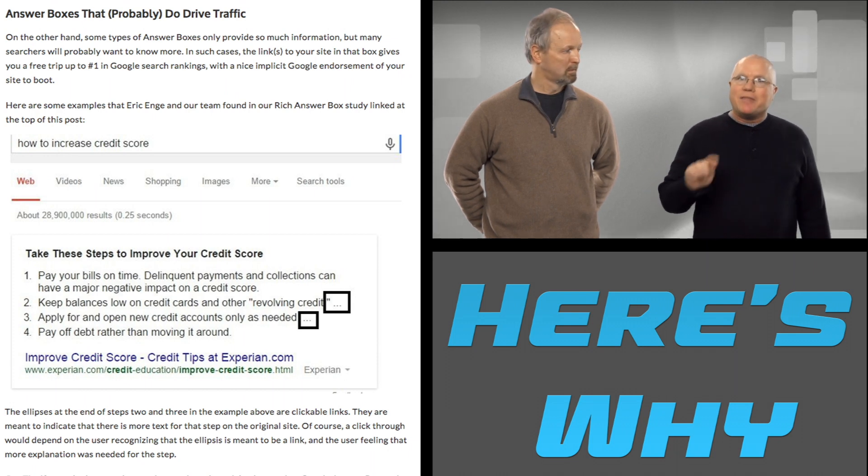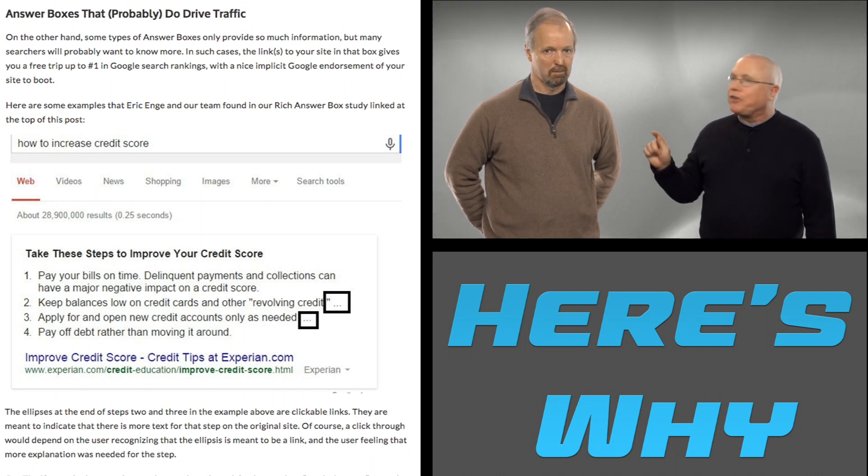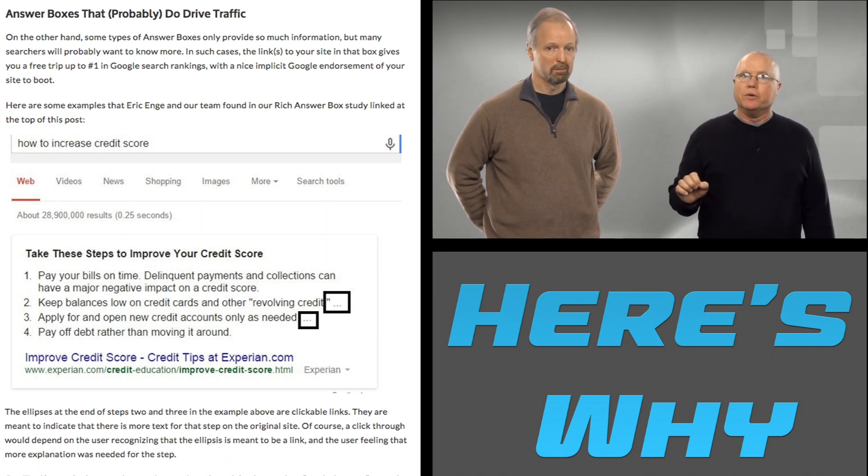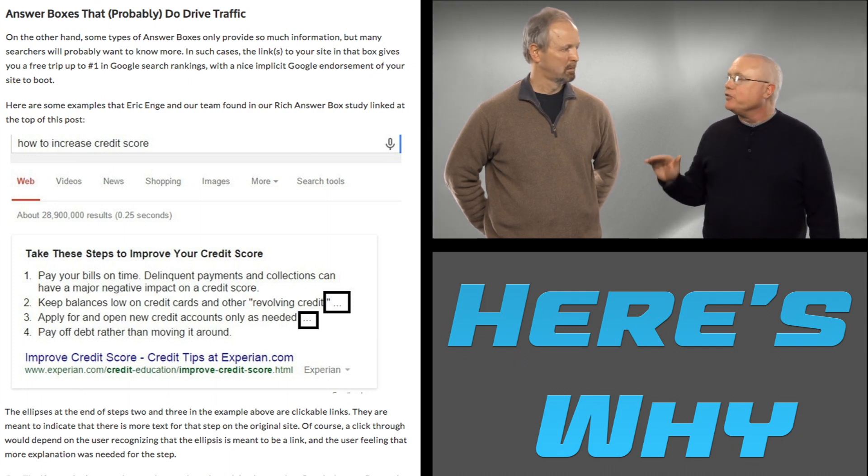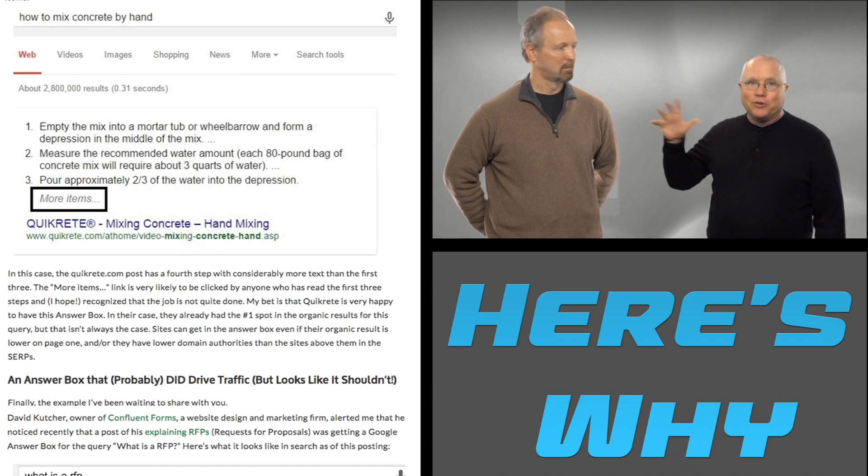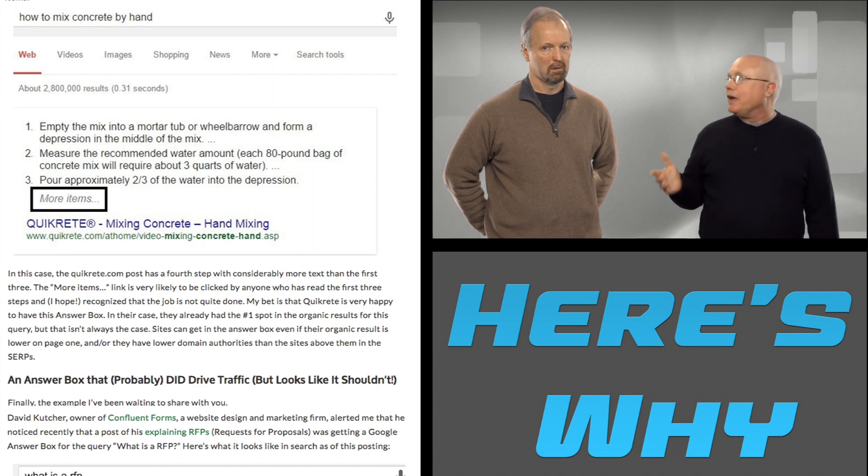Now, if you wanted to know more about that step, the ellipsis is actually a link that you can click on and will take you to the original site. Even more encouraging for click-throughs is the type of result where Google doesn't display all the steps from the original. Unless you want a soupy mess instead of usable concrete, you're sure to click that More Items link after the last displayed step.